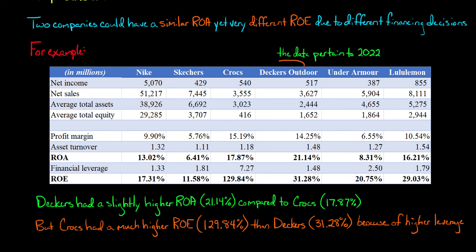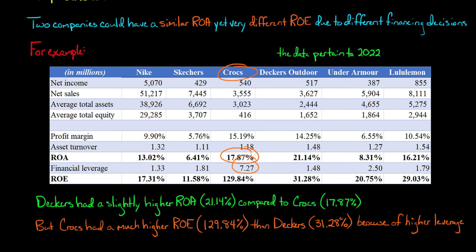Even though Decker's Outdoor did a better job using its assets to generate profit, the fact that Crocs was so much more heavily leveraged meant that the equity holders for Crocs had to put up a lot less equity to generate the profit they got. You might ask why doesn't every company use financial leverage of more than seven — because increasing leverage increases the chance of default, the risk of the firm, and the cost of financial distress. The key takeaway is that return on equity is a function of ROA and financial leverage, and when times are good, higher financial leverage results in a return on equity much higher than the company's return on assets.